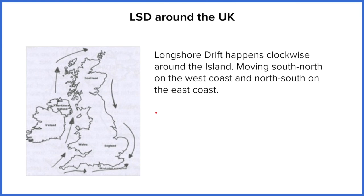So around the UK, longshore drift happens roughly in a clockwise direction. On the west coast, all the material — all the longshore drift — is moved up to the north. Then on the east coast it moves down to the south. There is an anomaly along the south coast, where it's moving towards the east as opposed to towards the west. But if you're down in the southwest, you're going to be more at risk of losing your beach, because all of that sediment is moving up the coast here and moving away down the coast over here.